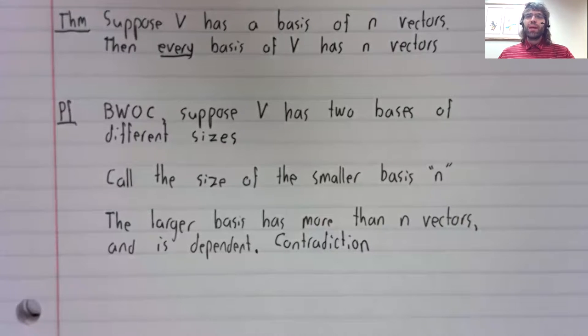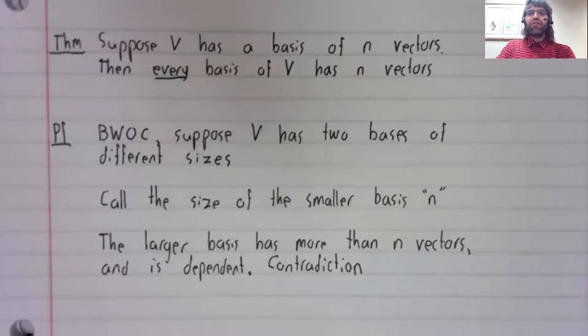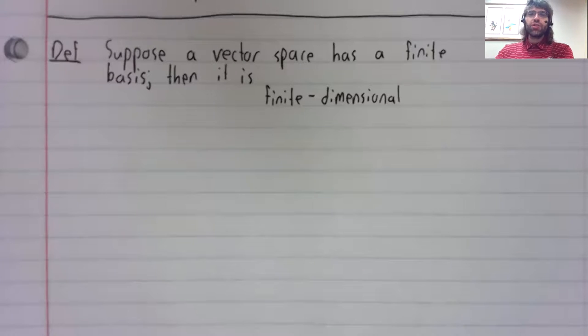Linear independence is part of the definition of being a basis. So we have this theorem, and this theorem is going to give us a definition. In fact, two definitions.